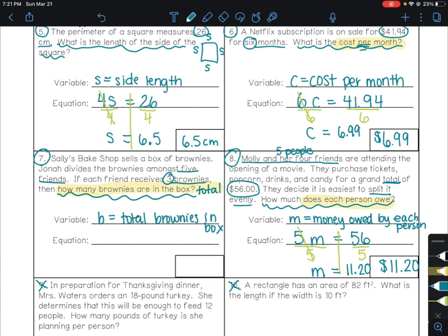So we have five friends and each friend receives three brownies. We have our total, which is B, the total number of brownies in the box. What we're going to do is take those brownies and split them up among five people. So B divided by five. And when you divide the brownies across five people, you get three brownies each. So we end up with a division equation.